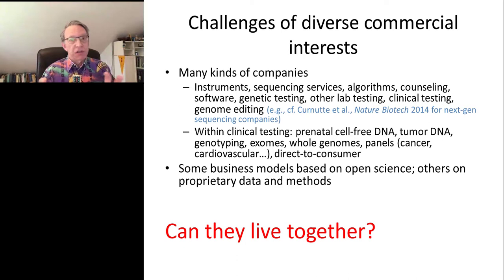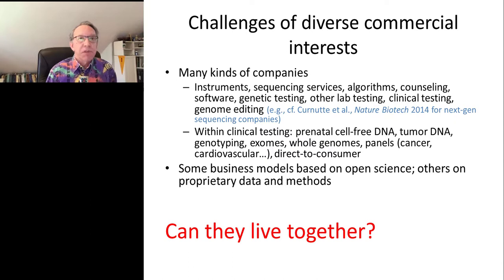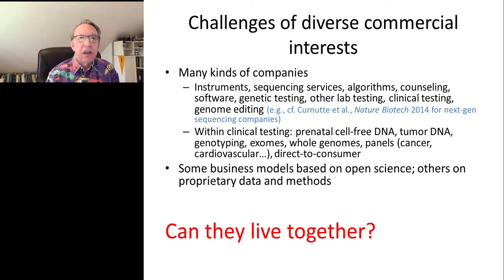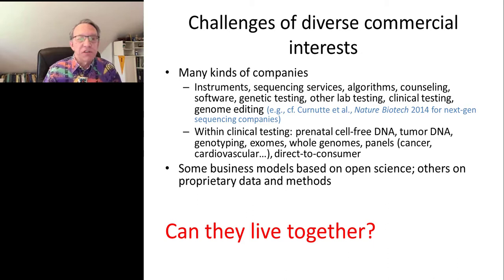Commercial incentives are a big part of the issue, because there are many more companies doing many more kinds of things than there were in 1996 when the Bermuda principles were enunciated. There are labs that do interpretation, labs that do genetic testing and hand off interpretation, labs doing clinical testing, ancestry testing, prenatal testing using serum- or plasma-based DNA, and labs specializing only in genomic testing. There are also different kinds of databases all over the world with very different business models — and if every lab keeps a proprietary database, we'll never achieve the global collective interpretation we need.